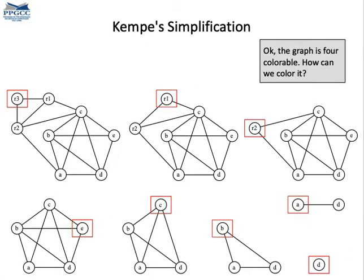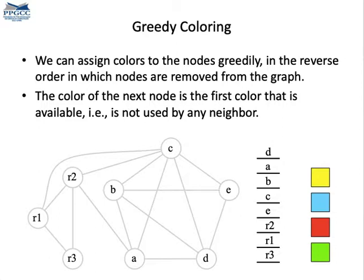If we have removed all the nodes coloring the graph, it's easy. We go back in the inverse order in which we have removed nodes, assigning them colors in a greedy fashion. Basically, we assign numbers to the colors and then we assign colors to registers, picking always the available color with the lowest number.